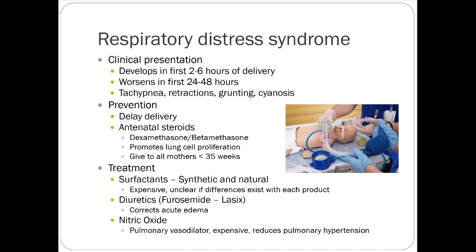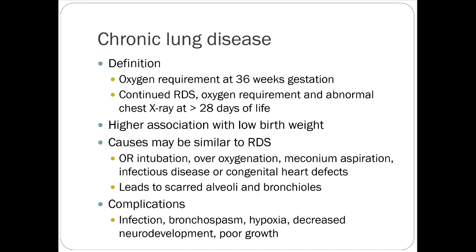For RDS: keep airways open, try nebulization, maybe nitric oxide or an albuterol-type product. Chronic lung disease is defined as oxygen required at 36 weeks gestation — a continuation of RDS with higher association with low birth weight. Prevention includes vitamin A supplementation, since premature neonates tend to have low blood concentrations, plus fluid restriction and surfactant. Studies show that as the kid gains weight at a normal rate, the incidence of chronic lung disease tapers off, so adequate nutrition is really important.